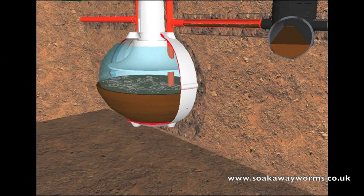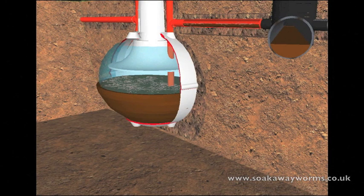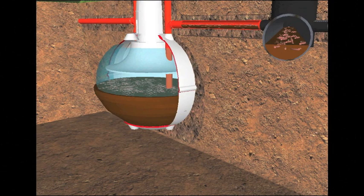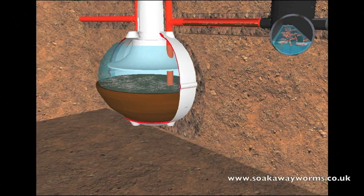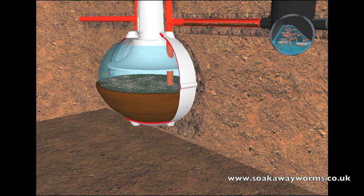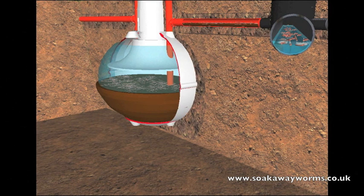When those soakaway worms start making their way deep into the arteries of your soakaway, it isn't long before they convert and transform that sludge and grease back into a natural, safe, organic, clean liquid. They do this very quickly. These worms will start working and unblocking the pores and perforated holes that once clogged your soakaway up.